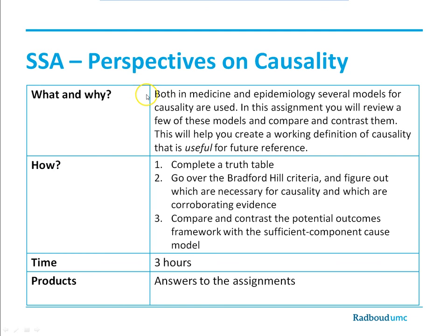Rounding up, you're now going to go into a self-study assignment. I want you to create a truth table to practice necessity and sufficiency. Look a little bit into the Bradford-Hill criteria — the article by Bradford Hill is really good; he sums up advice that, 50 years later, still holds true. And finally, the potential outcomes framework is something you may come across in the next few weeks — compare this with the sufficient cause model. If you have any questions about this lecture, please leave them in the comments below, and I'll try to answer them as soon as I have time. Thank you for your attention, and hopefully see you next time.